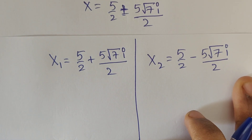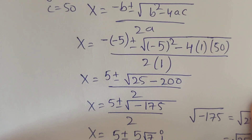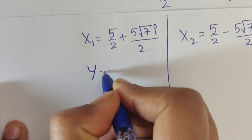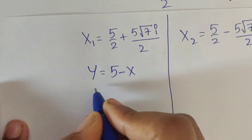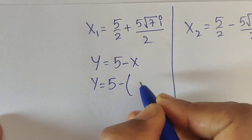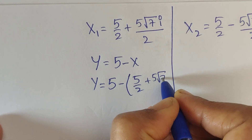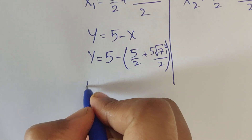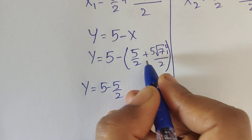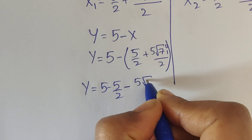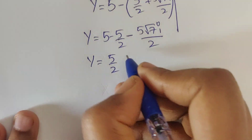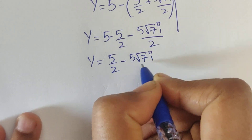Now we need to find the value of y. Using equation 3, y equals 5 minus x. Substituting x₁: y₁ equals 5 minus (5 by 2 plus 5 square root of 7 i divided by 2), which gives y₁ equals 5 by 2 minus 5 square root of 7 i divided by 2.